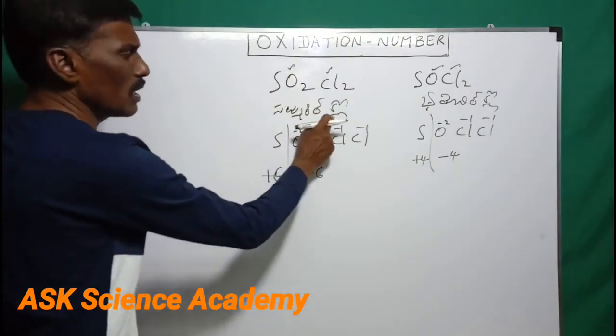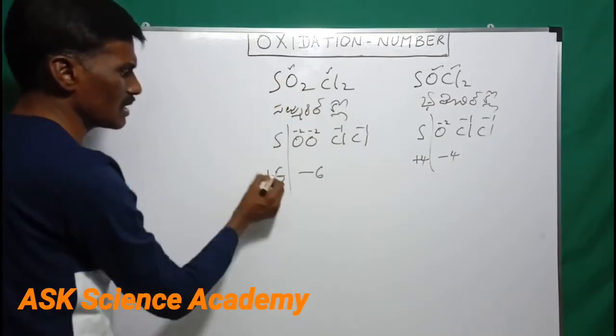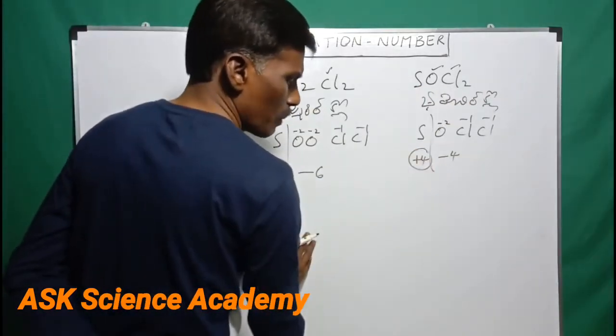SO2Cl2 sulfuryl chloride, thionyl chloride. Sulfuryl chloride, sulfur oxidation state is plus 6. Thionyl chloride, sulfur oxidation state is plus 4.